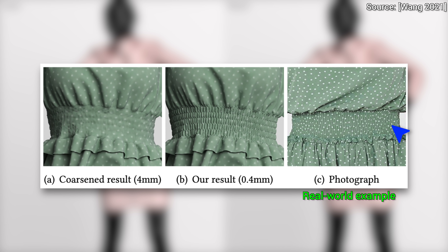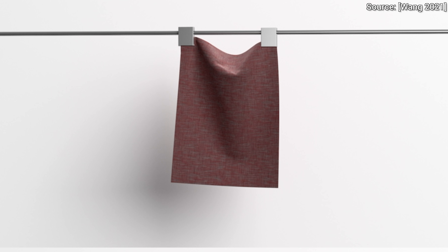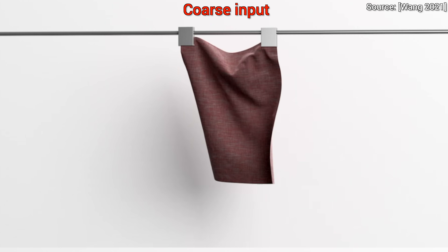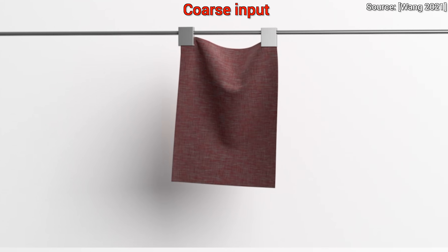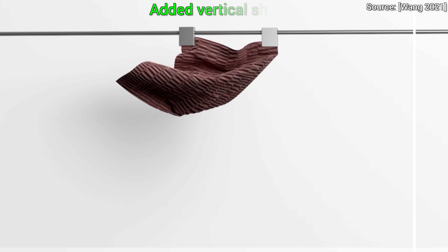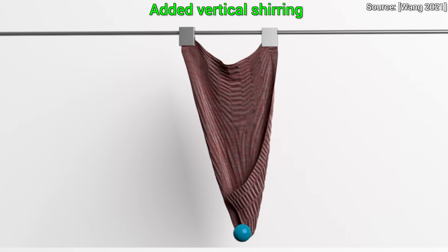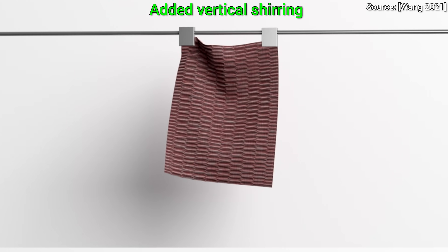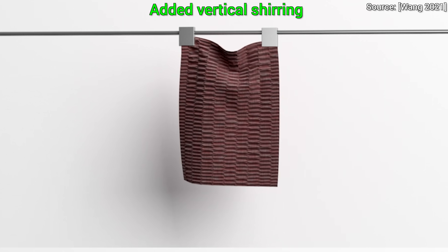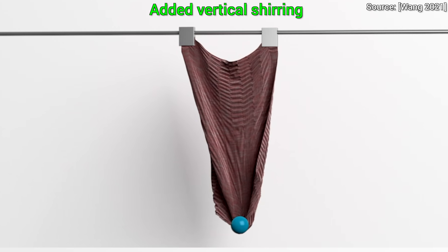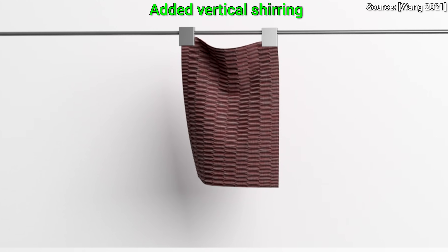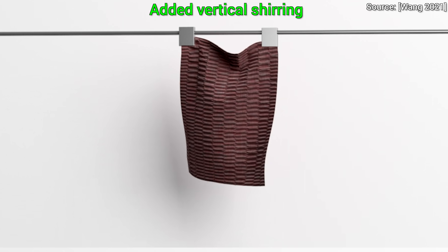Let's proceed to the second issue. How does this work? Well, we can give it a piece of coarse input geometry, and this new technique synthesizes and simulates additional wrinkles on it. For instance, here we can add these vertical shirring patterns to it. And not only that, but we can still have collision detection, so it can interact with other objects, and suddenly the whole piece looks beautifully lifelike.